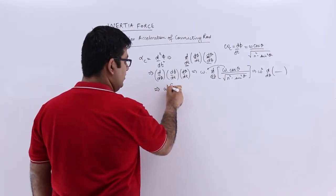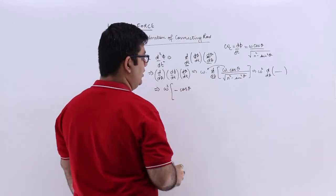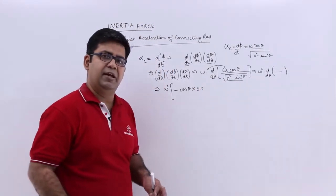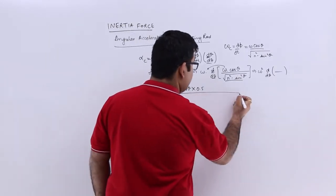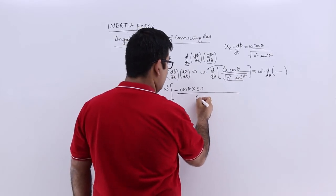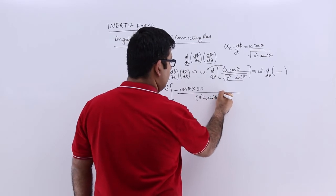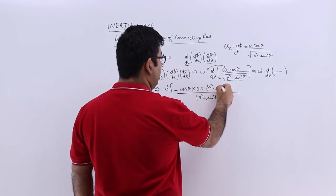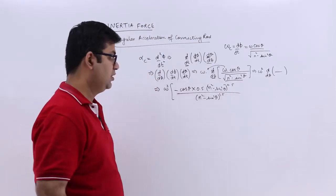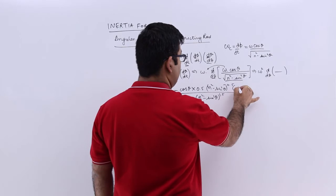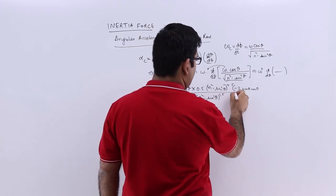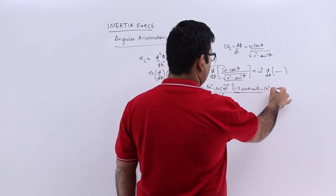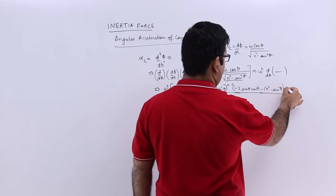Differentiating with respect to theta using the u/v (quotient) rule: you will get omega² times cos(theta) into 0.5, with the denominator (n² − sin²(theta)) to the power 1.5, minus (n² − sin²(theta)) to the power −0.5.